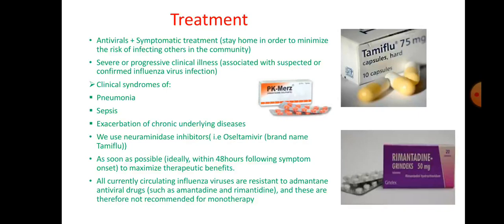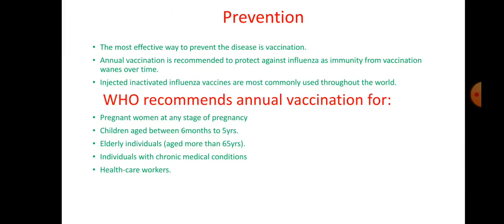Treatment: as is well known, viral infections can be treated with antivirals. Severe or progressive clinical illness associated with suspected or confirmed influenza virus — clinical syndromes include pneumonia, sepsis, and exacerbation of chronic underlying diseases. We use Oseltamivir, brand name Tamiflu, which is one of the most widely used drugs for influenza. Others include the adamantanes, which consist of amantadine and rimantadine.